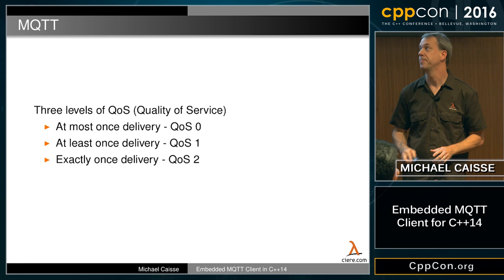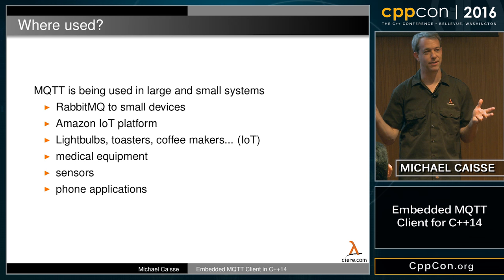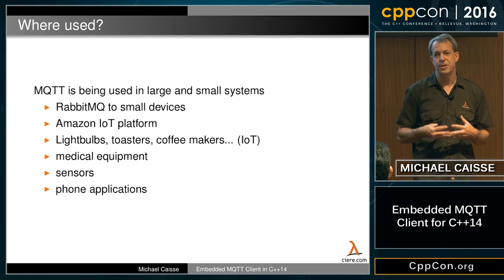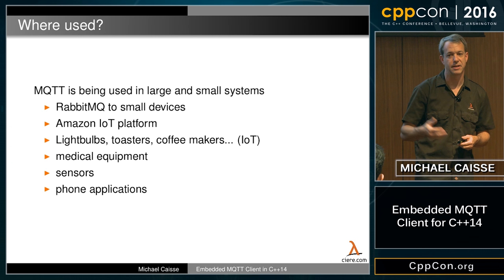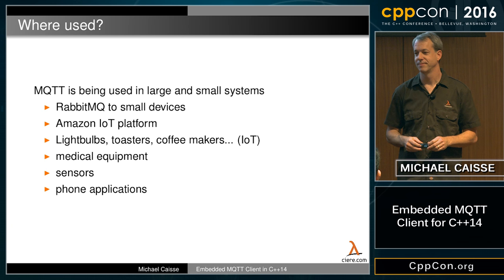MQTT has been used in a lot of different things. Amazon uses it in their Internet of Things platform. RabbitMQ extends it and uses it as something else. It's been around and exists in a variety of different applications — Facebook Messenger is another one. So it's not just some weird thing I dreamt up — it's real.